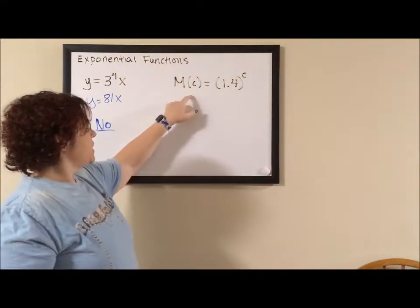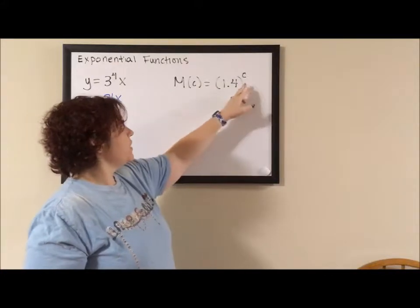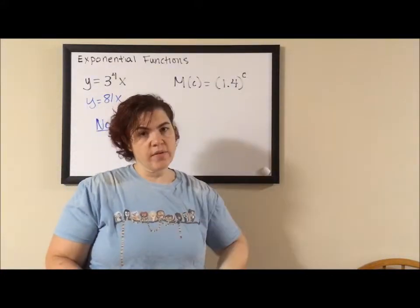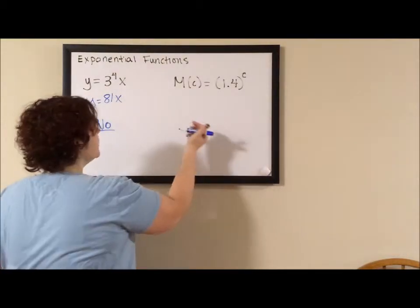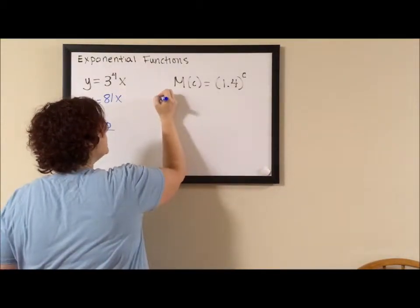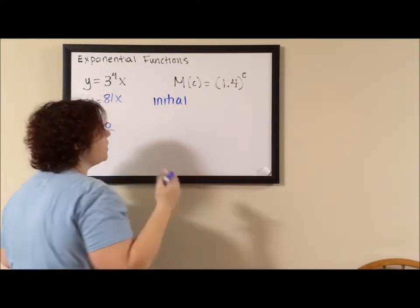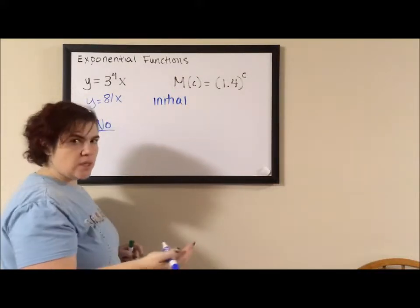m(c) equals 1.4 to the c. So this is exponential. You can tell because our exponent is a variable. This one's a little bit tricky. The first thing I want to talk about is the initial value. For the initial value, that's what this equals when c equals 0.